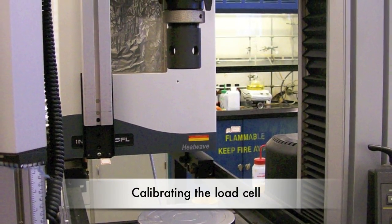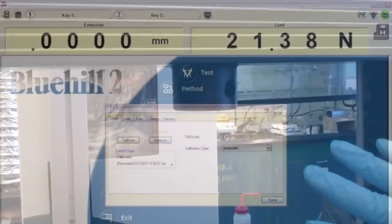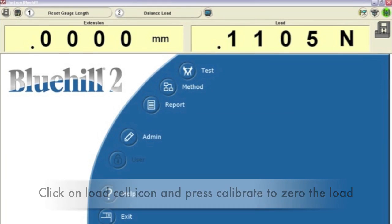Next, you need to calibrate the load cell. Remove any attachments so the load cell is freely hanging. In the software, click on the load cell icon in the upper right corner and press calibrate. This will zero the load. Click done when calibration is complete.